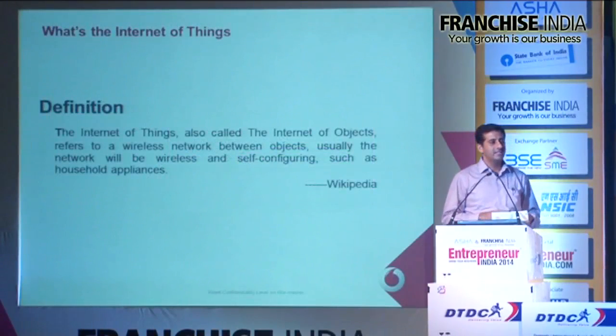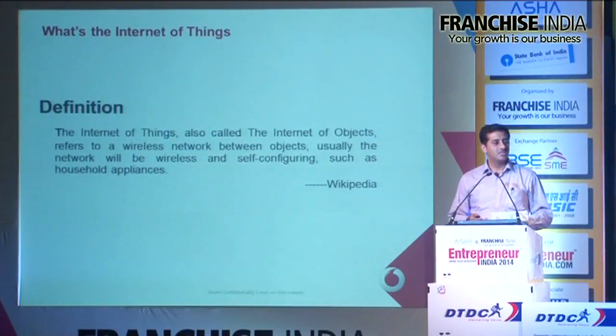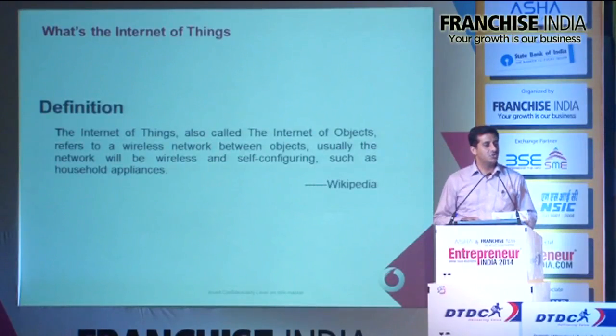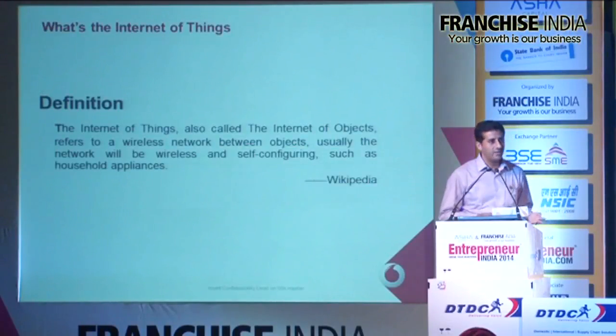There is a very basic definition on Wikipedia: the Internet of Things, also called Internet of Objects, refers to a wireless network between objects. Usually the network will be wireless and self-configuring, such as household appliances, etc. Now to give you context on why Internet of Things is a big buzzword today and what various organizations are doing - I would like to share how many devices are being connected on this Internet.